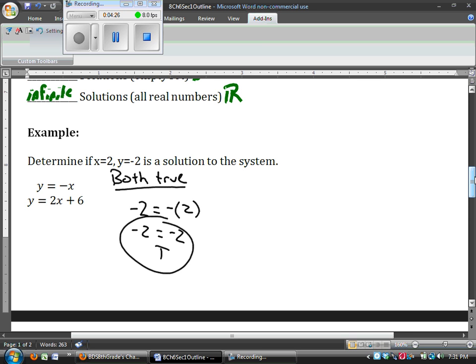But it has to make both our equations true. So we plug it into the second equation. Negative 2 equals 2 times 2 plus 6. I just plugged in my negative 2 for y and my positive 2 for x. So negative 2 equals 4 plus 6. Negative 2 is equal to 10, which of course is false.